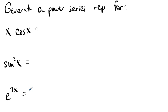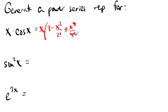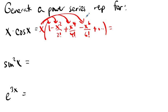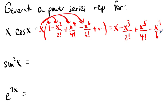So, what's this at the top? This is x times cos x. And literally — that's what you do. You take the cosine series and multiply every term by x.